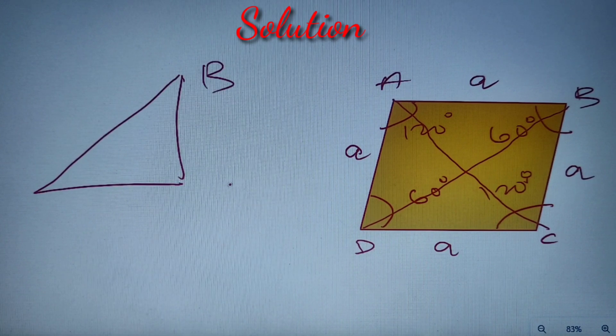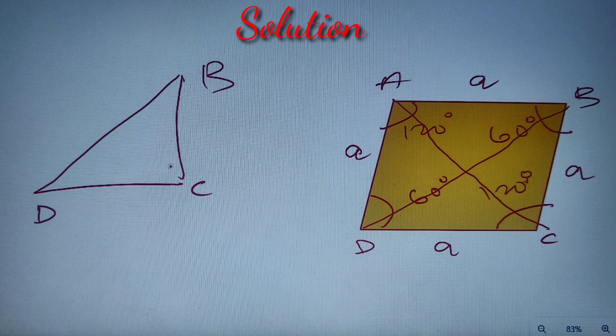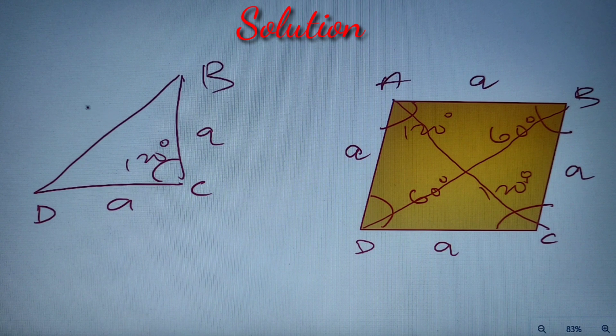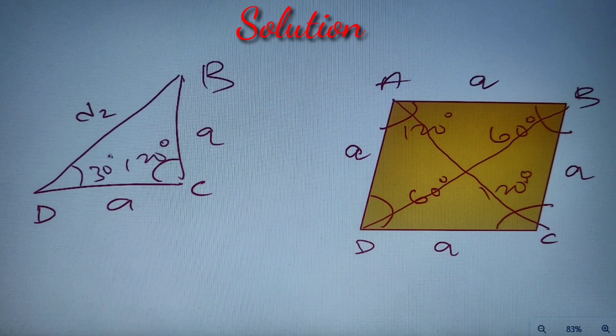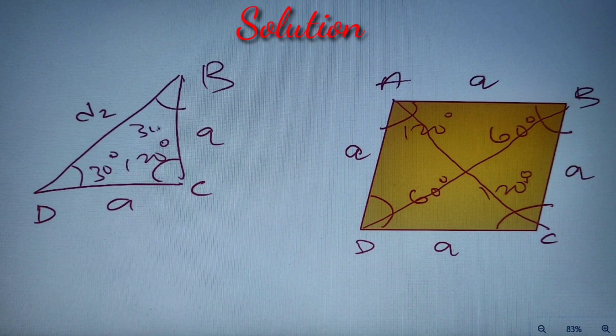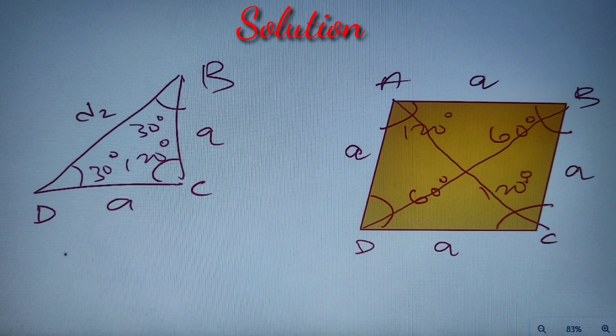To find the value of D2, let us consider the triangle BCD. Now we know that this is B, this is C, and this is D, and this equals 120 degrees. This is a, this is a, and this is equal to D2. Now if this is an isosceles triangle, then this is equal to 30 degrees and this is also equal to 30 degrees.